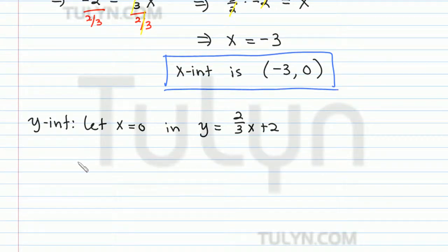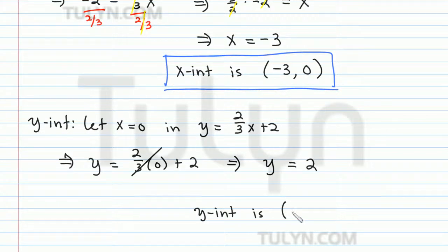So we have y equals two-thirds times zero plus two. And anything multiplied by zero is zero, so this cancels out. So we're left simply with y equals two. So we can say our y-intercept is the point x comma y, so x is zero comma two. So there we have our x-intercepts and our y-intercepts for the line y equals two-thirds x plus two.